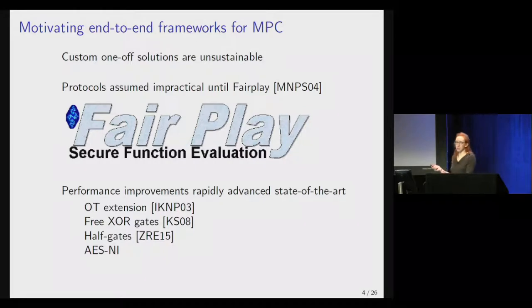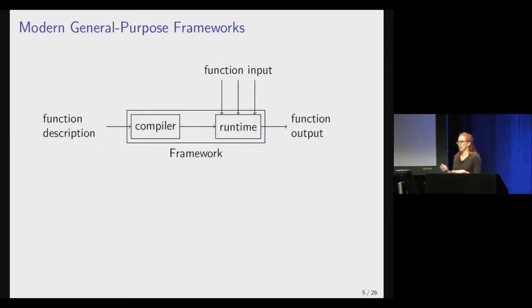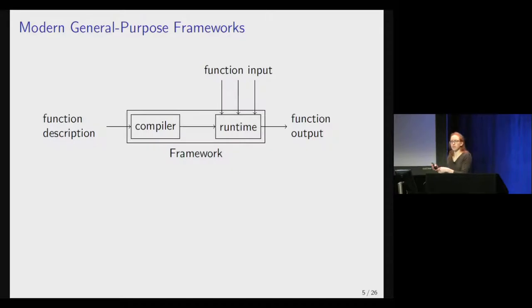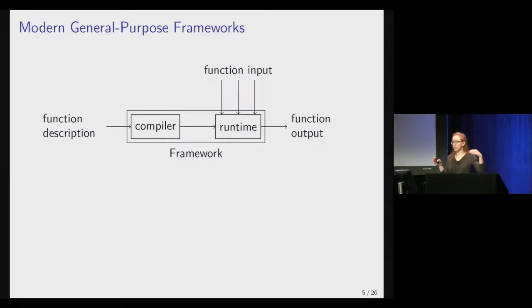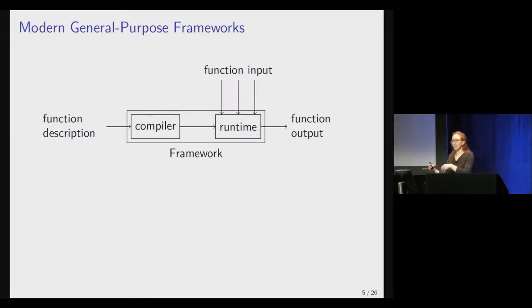In this work, we looked at end-to-end general-purpose frameworks. General purpose means it can execute any computation you give it. End-to-end means the framework has a compiler, which takes some high-level function description and translates it down to a representation that the runtime phase and the algorithm can understand. Then the runtime takes this compiler output, is executed by all the parties simultaneously, they provide their inputs, execute MPC, and produce an output.